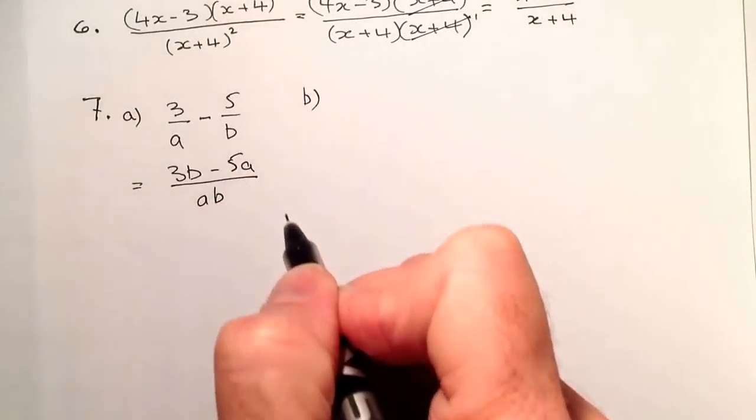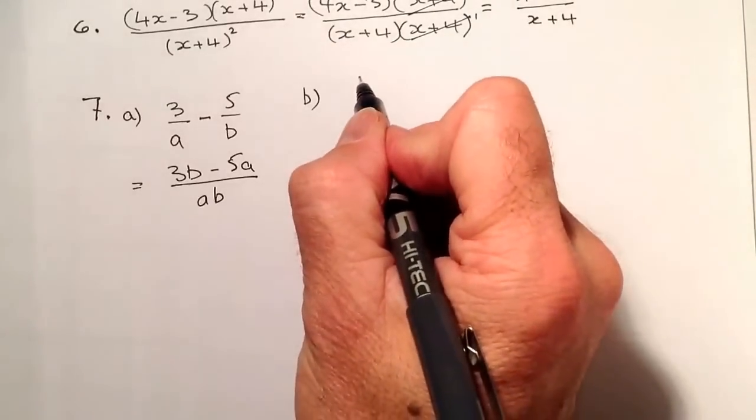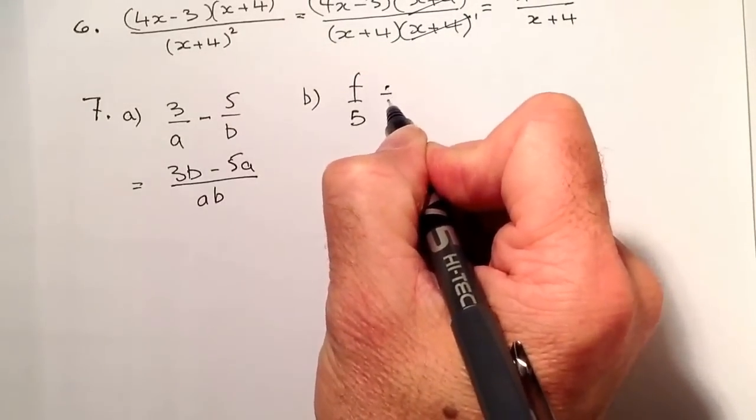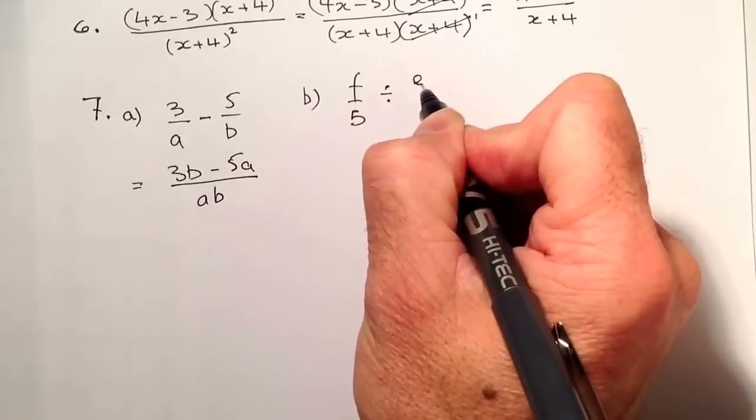Let's go on to B. For part B, it's a fraction division. So I've got F over 5, I'm going to divide that by E over G.